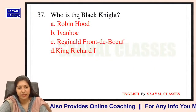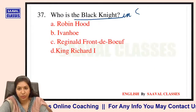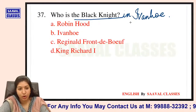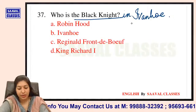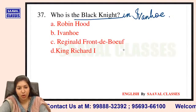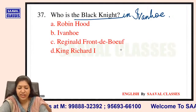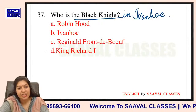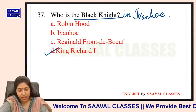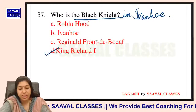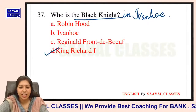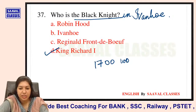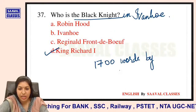Question number 37: Who is the Black Knight in Ivanhoe? Options are Robin Hood, Ivanhoe, Reginald Front-de-Boeuf, ya King Richard I? It is King Richard I.